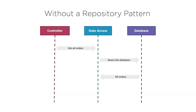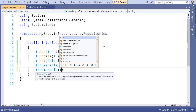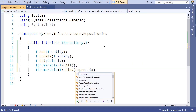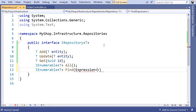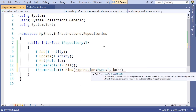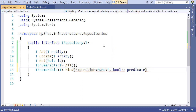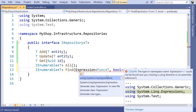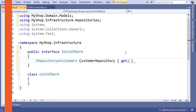This course is for those of you that want to learn about the different data access patterns, how they're implemented using C-Sharp and best applied in your applications. This means that we're going to dig into repositories, unit of work, as well as lazy loading.